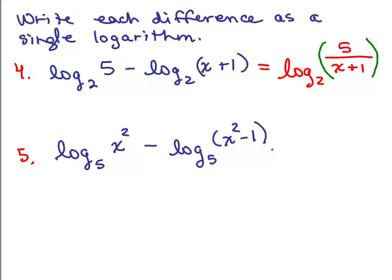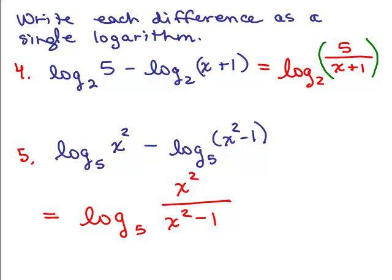For the next one, the base is 5. Notice this only works if the base for each log is exactly the same. In the numerator we have x squared, and in the denominator x squared minus 1. Can you cancel those x squares? Nope — you can only cancel if everything's factored and has a common factor. x squared factors to x times x, whereas x squared minus 1 factors to x plus 1 times x minus 1, so there are no common factors. That is the answer.